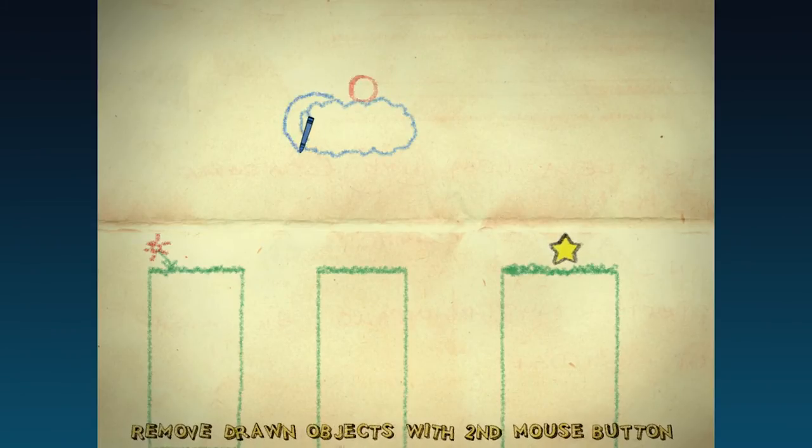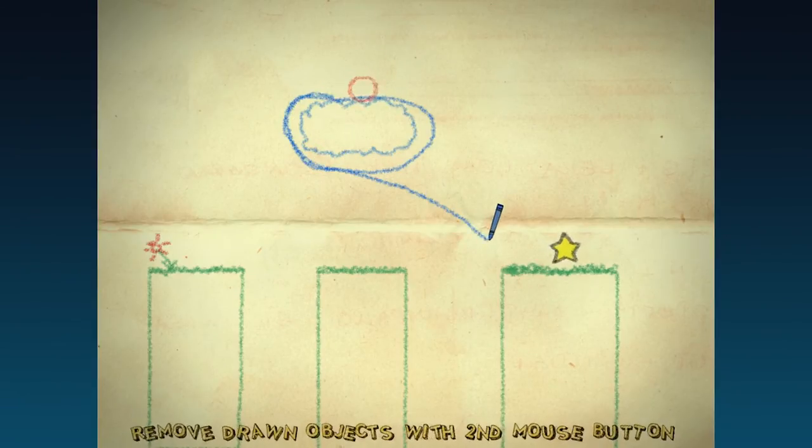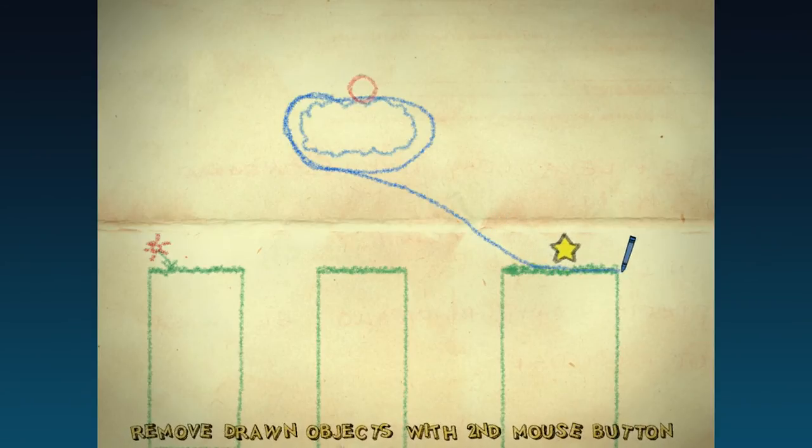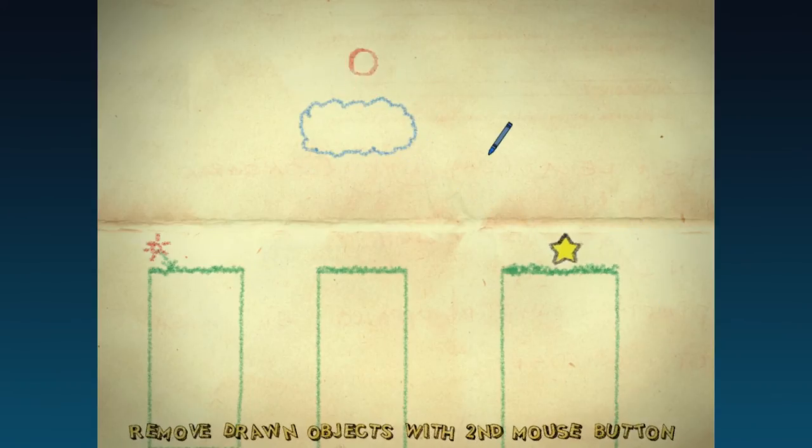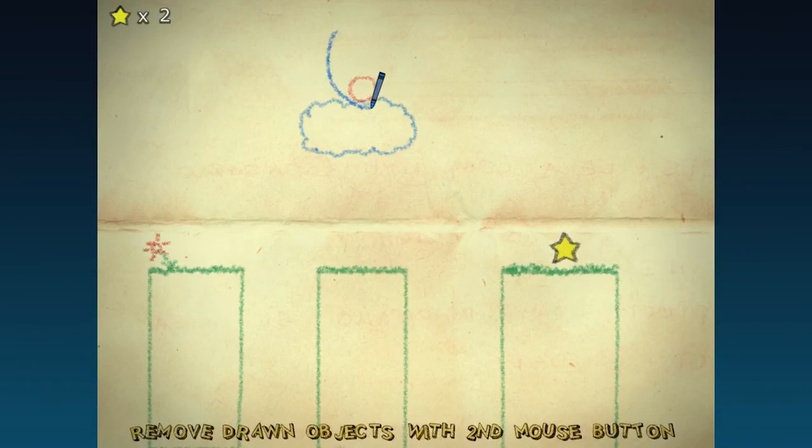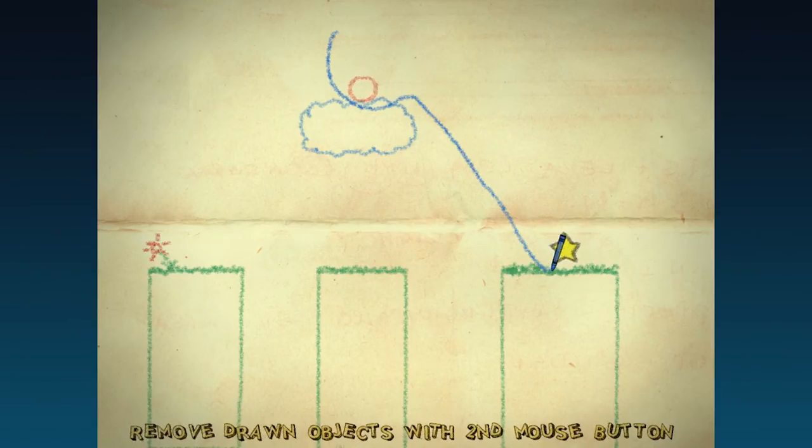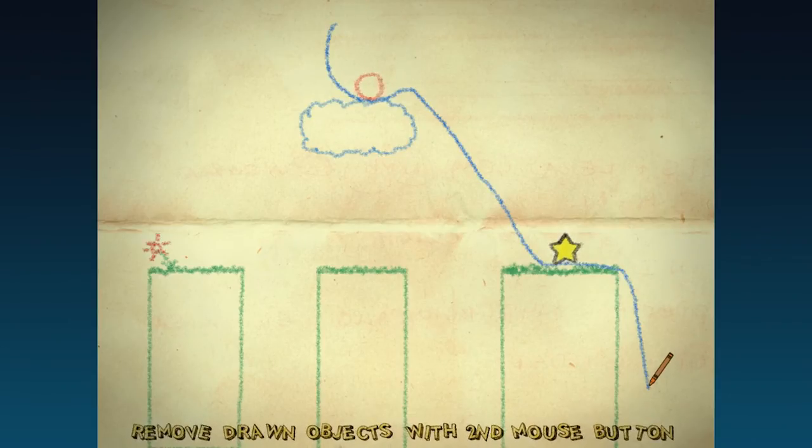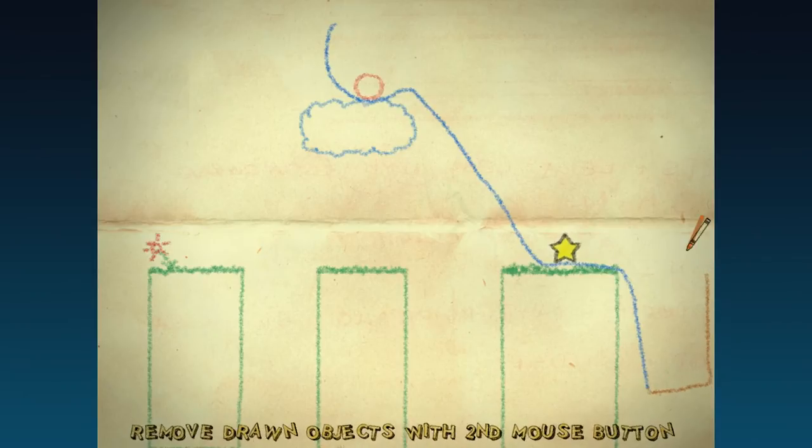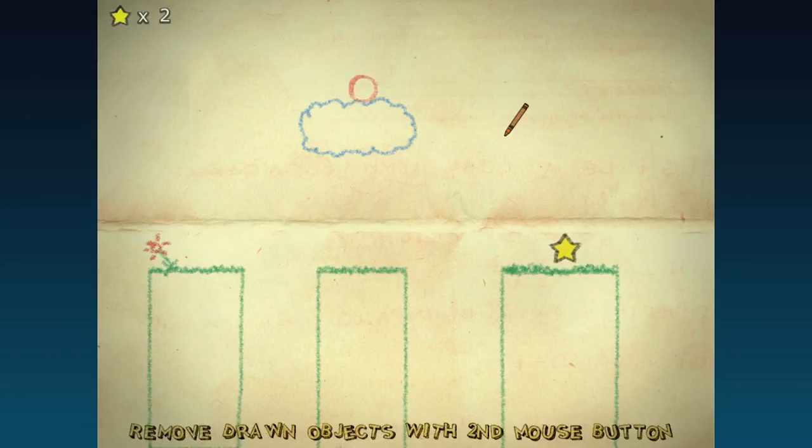Now you can do some pretty tricky things like this. So if we circle this cloud, hopefully that works. And then draw a little slope down here and a little catch. That didn't really work. So we'll try this instead. That didn't really work either. But we can add a bucket onto it.